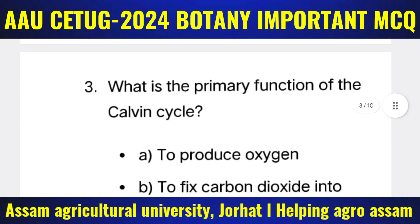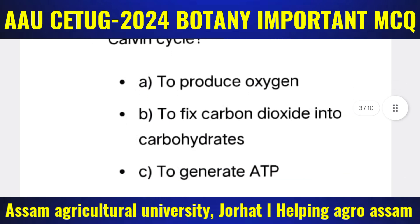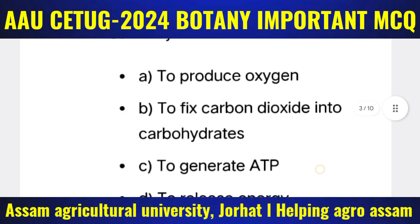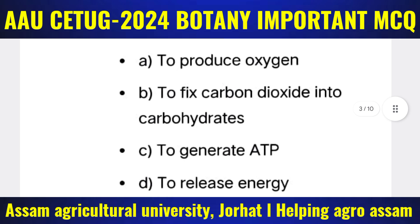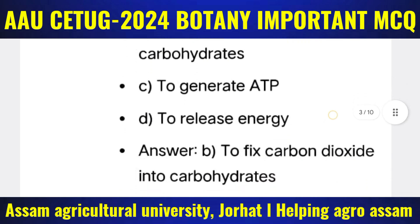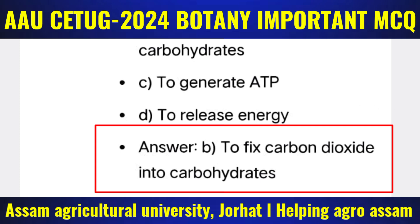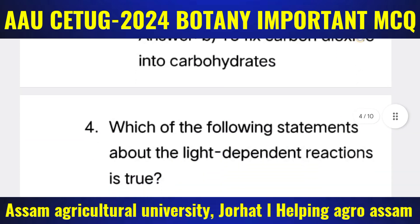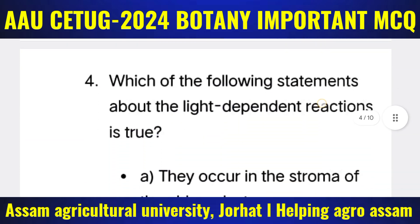Next question: What is the primary function of the Calvin cycle? The options are: (a) To produce oxygen, (b) To fix carbon dioxide into carbohydrates, (c) To generate ATP, (d) To release energy. The correct answer is option B — to fix carbon dioxide into carbohydrates.